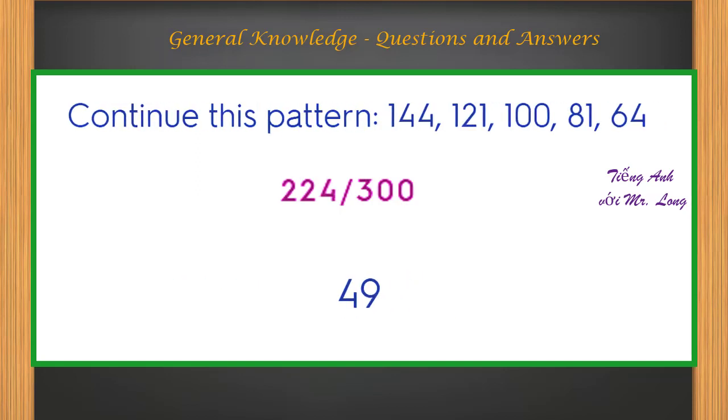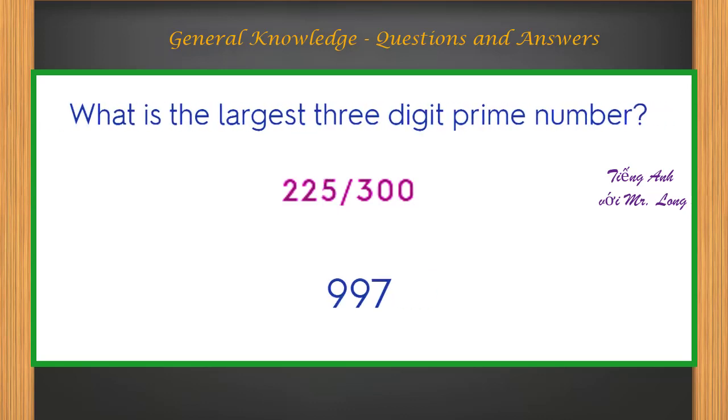Continue this pattern: 144, 121, 100, 81, 64, 49. What is the largest three-digit prime number? 997.